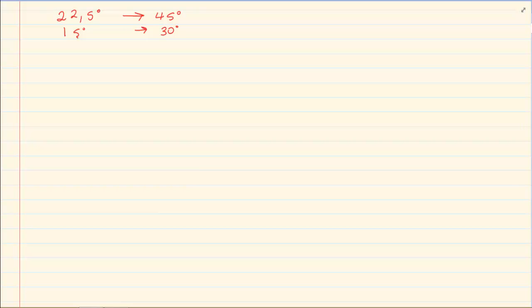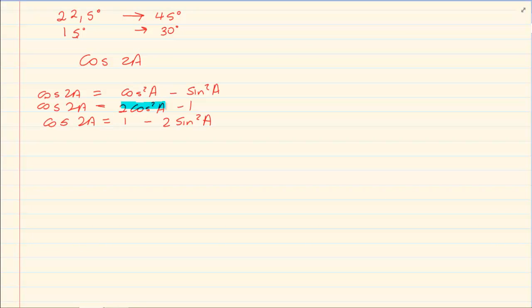Now when you are working with a half angle, the best rule to work with is cos 2a. The reason for this is because cos 2a works with all identities. It works with cos and it works with sin.